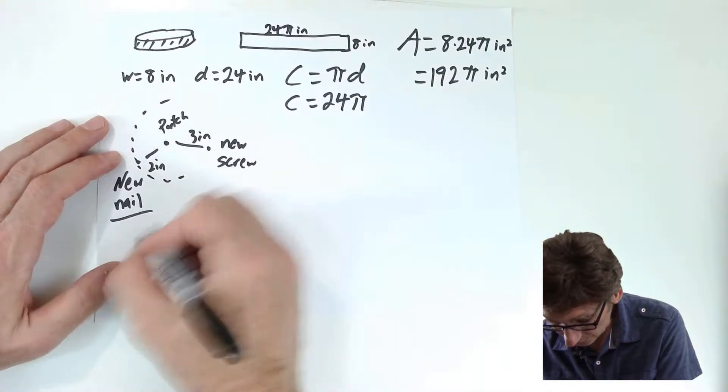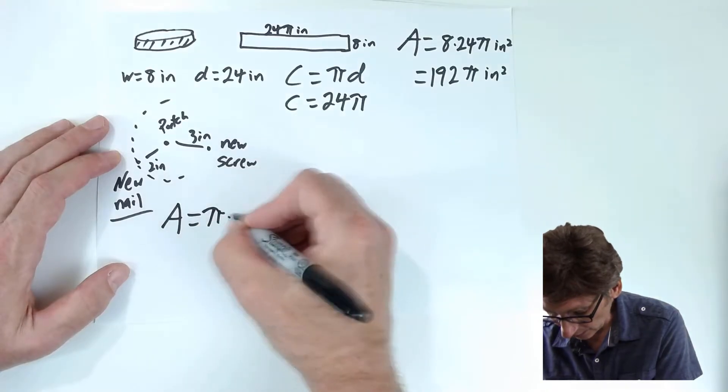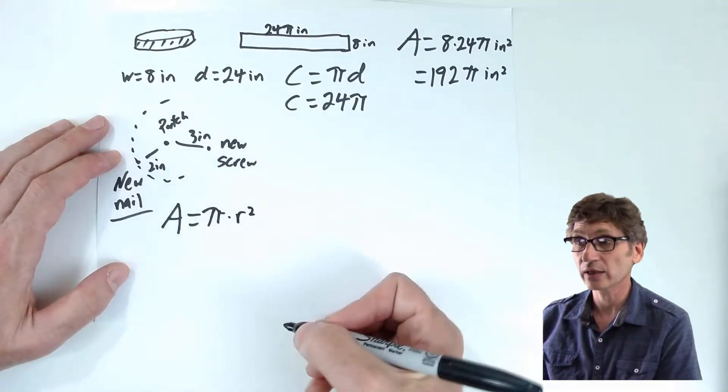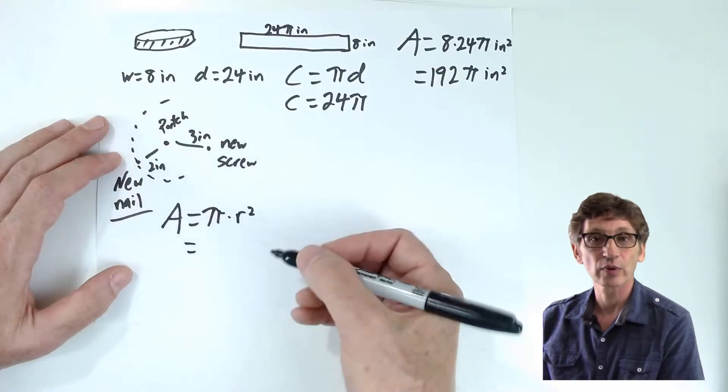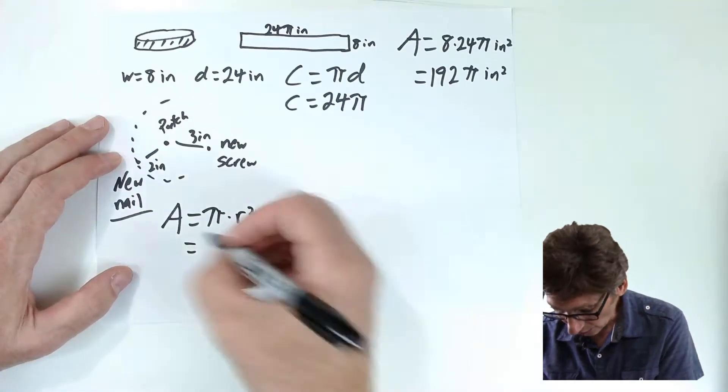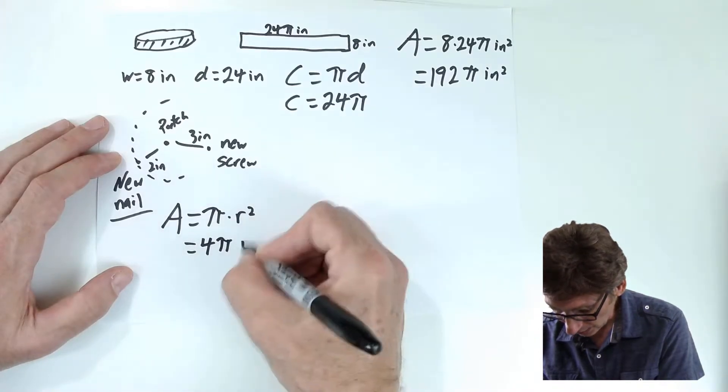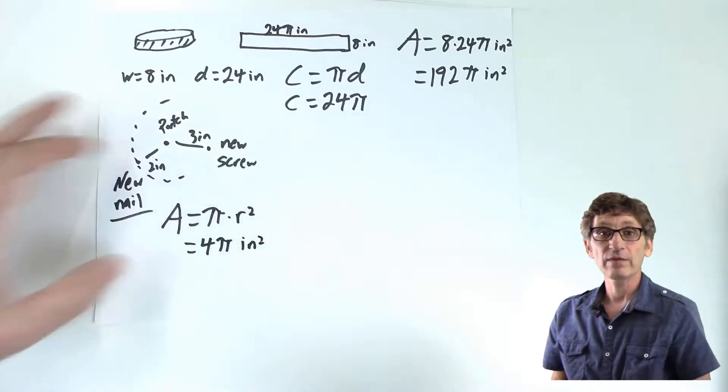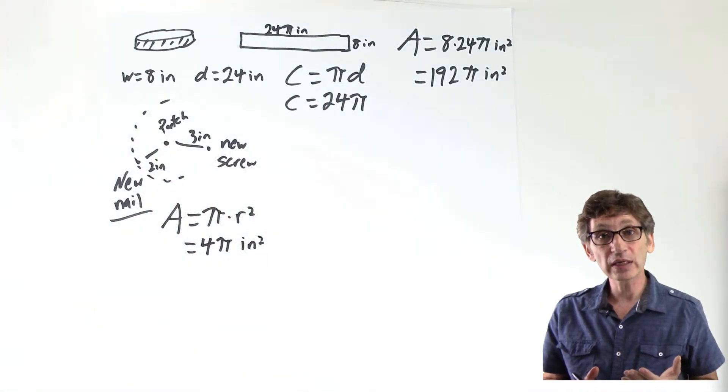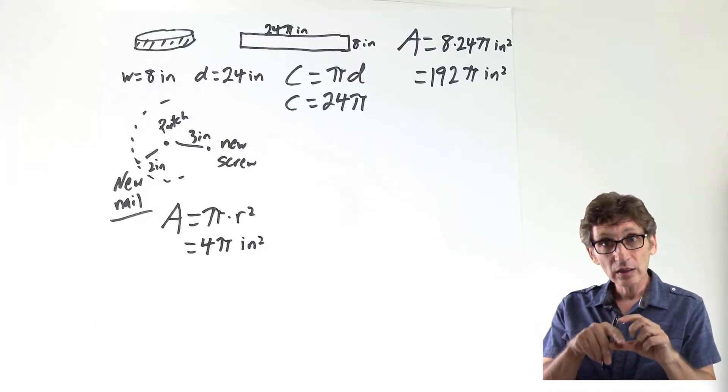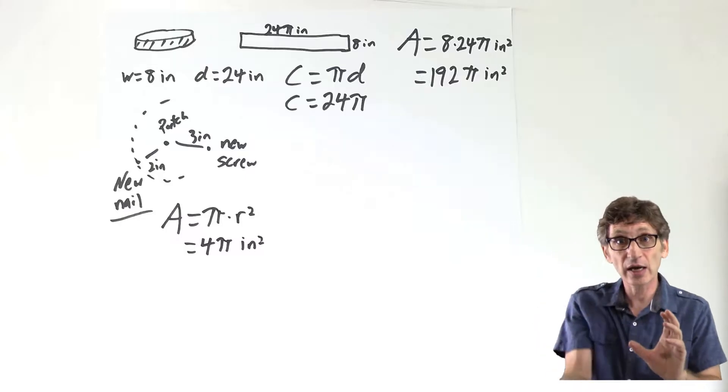Let's find the area of that. The area of a circle is pi times the radius squared. In this case, our radius is two, square of two is four. So our area is four pi square inches. Fantastic. Now we have enough to figure out the probability of that nail being within two inches of the original patch on that entire surface.